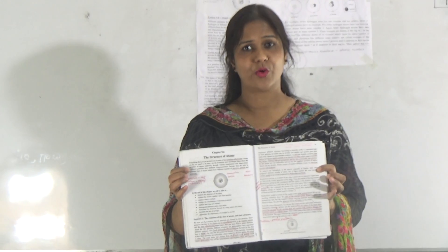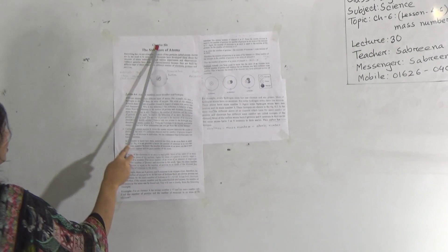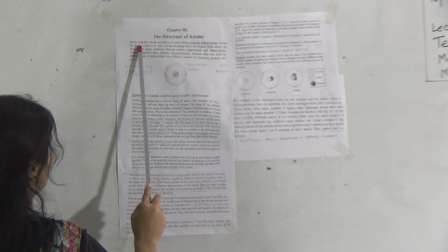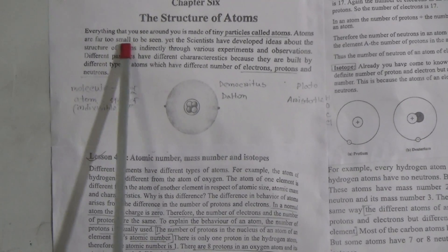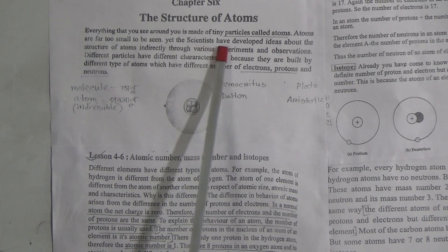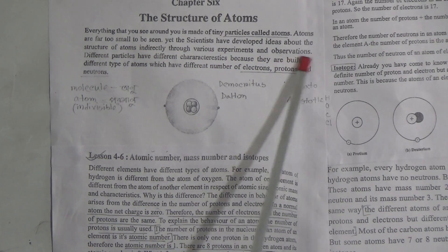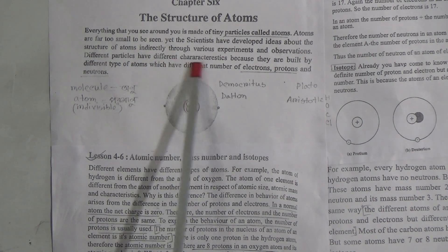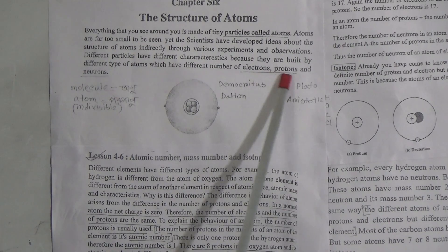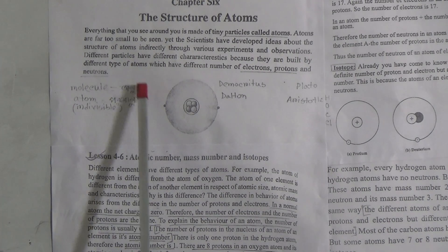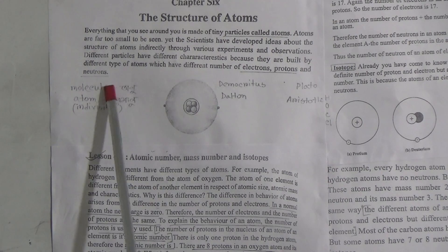The name of the chapter is 'The Structure of Atoms.' Everything that you see around is made of tiny particles called atoms. Atoms are far too small to be seen, yet scientists have developed ideas about the structure of atoms indirectly through various experiments and observations. Different particles have different characteristics because they are built by different types of atoms which have different numbers of electrons, protons, and neutrons. If we break the atom, we will get electron, proton, and neutron.